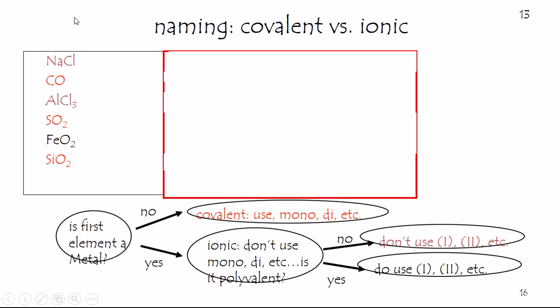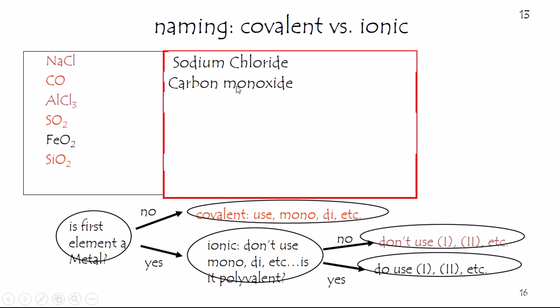I'll bet you know that one. That one would simply be called sodium chloride. Notice we did not say sodium monochloride, but we do say carbon monoxide. Learn from this. Covalent substances use the mono-di-tri system — let's call that the prefix system. Ionic compounds do not, so apply it. This is an ionic compound.